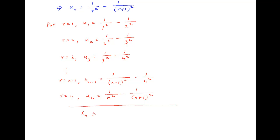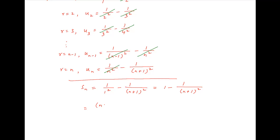Adding all of these equations, on the left hand side we have the sum of the first n terms of the series, denoted by Sn. On the right hand side, 1/2² in the first row cancels with 1/2² in the second row, 1/3² in the second row cancels with 1/3² in the third row, and so on, till we are left with only two terms: 1/1² minus 1/(n+1)². This can be written as (n+1)² minus 1 divided by (n+1)², which equals n² + 2n + 1 minus 1 divided by (n+1)², and the 1s cancel in the numerator.